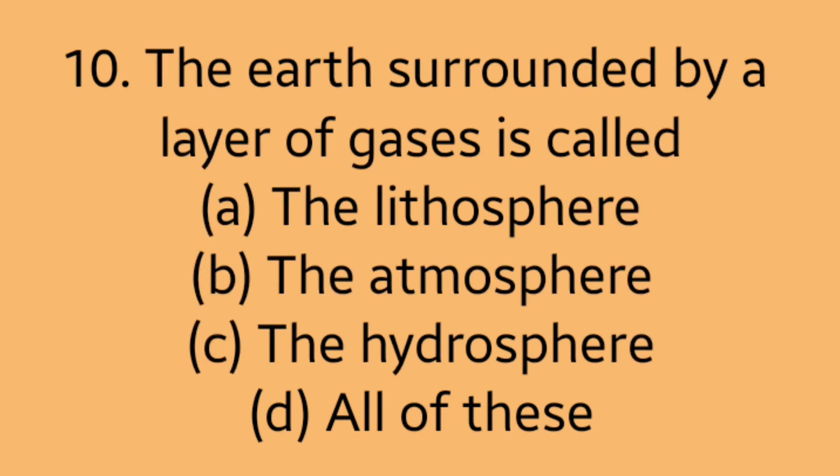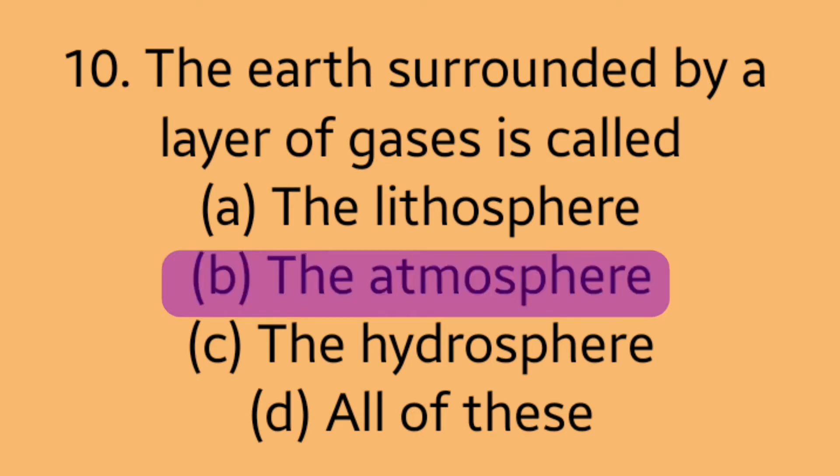Question 10: The earth surrounded by a layer of gases is called? Option A: the lithosphere. Option B: the atmosphere. Option C: the hydrosphere. Option D: all of these. Answer is Option B, the atmosphere.